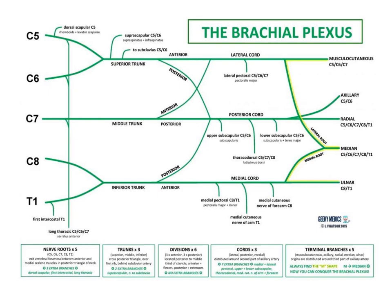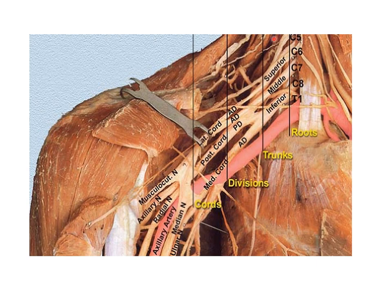In the diagram we can see the superior, middle, and inferior trunks with their divisions. From the lateral cord, the musculocutaneous nerve supplies the biceps, and the lateral root of the median nerve joins the medial root from the medial cord to form the median nerve. From the posterior cord the major branch is the axillary nerve supplying deltoid and teres minor, and the largest branch is the radial nerve. The ulnar nerve also comes from the medial cord.